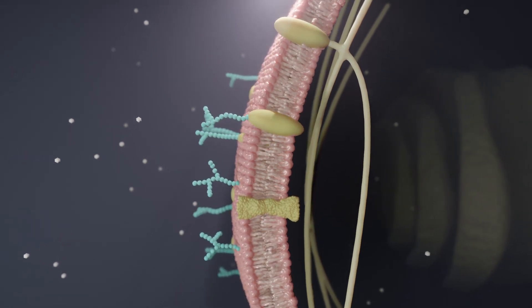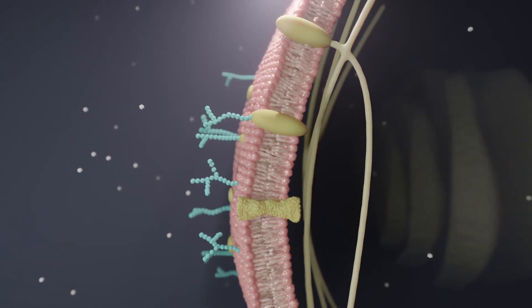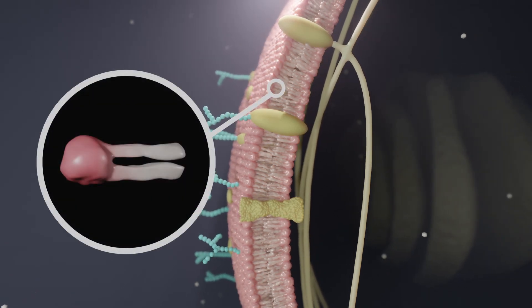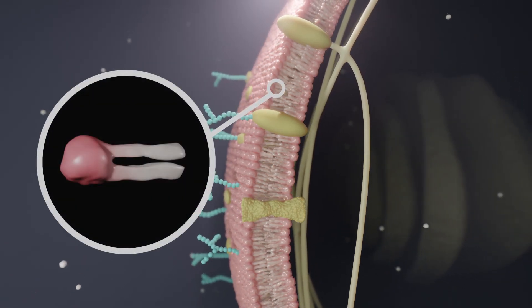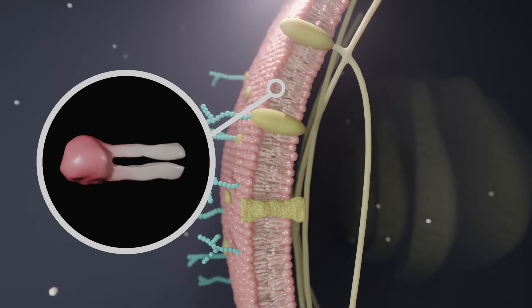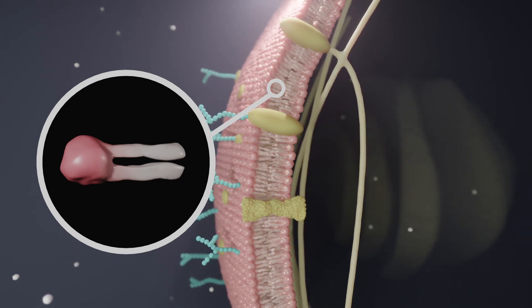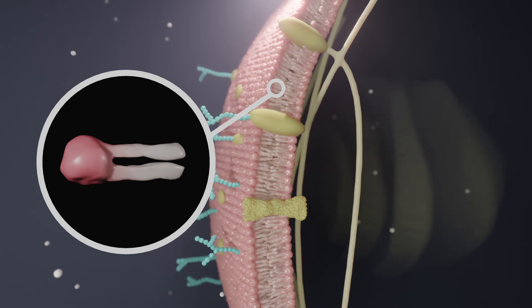The membrane is primarily composed of phospholipid molecules, each consisting of a hydrophilic head and two hydrophobic tails. These molecules are arranged so that the hydrophilic heads face the aqueous internal or external environment.